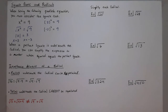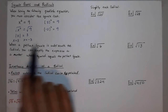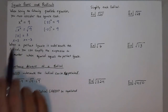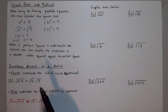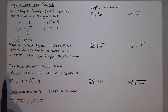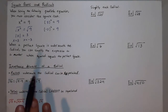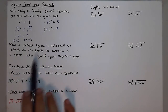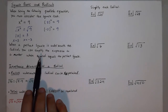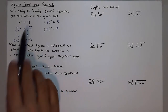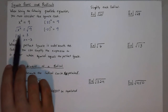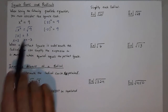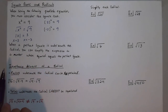Before I move on — when a perfect square is underneath a radical, you can simplify the expression to a number that, when squared, equals that perfect square. We're going to focus on these radicals and then get into more of the solving process in later lessons.